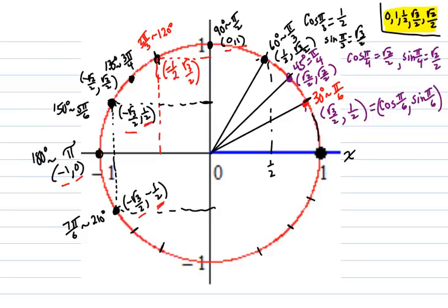Moving to this π/4-type location: that's 5π/4, coterminal to 225 degrees — 45 degrees past 180. The coordinates of that point are negative √2/2, negative √2/2. The picture tells you. So the cosine of 5π/4 is negative √2/2, and the sine of 5π/4 is negative √2/2.